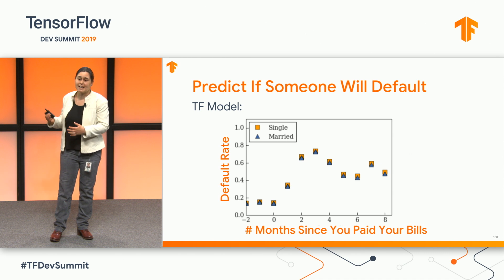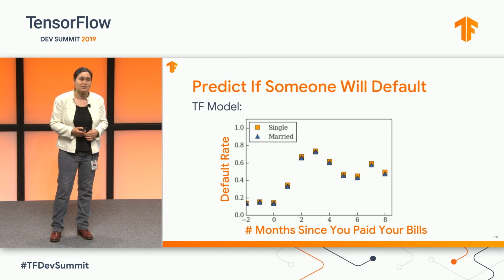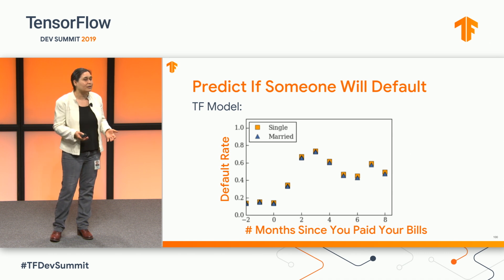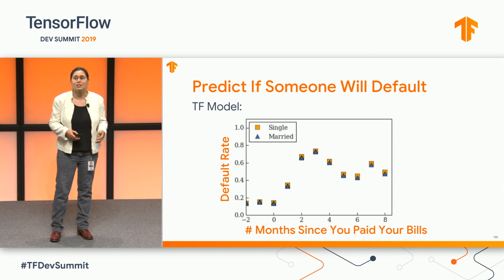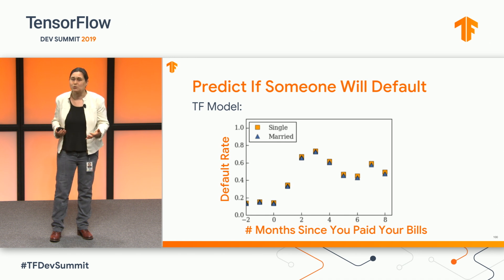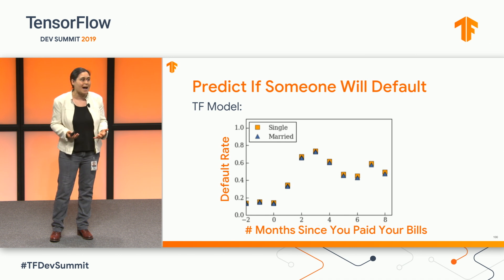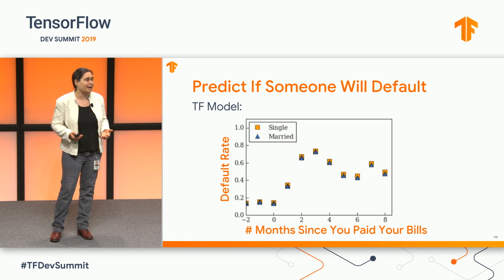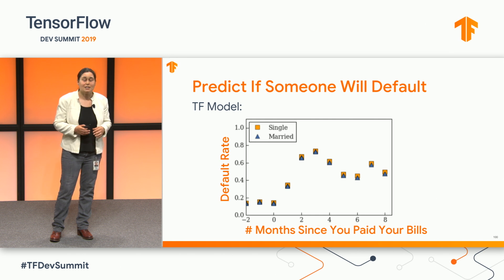Here we're just looking at this in a two-dimensional space. If we had the full 24-dimensional features — or 30, or 100 features — there are going to be pockets of the space where this sort of thing may be happening, and we may not even realize that we're getting this sort of bad, strange, possibly unethical behavior from our model.